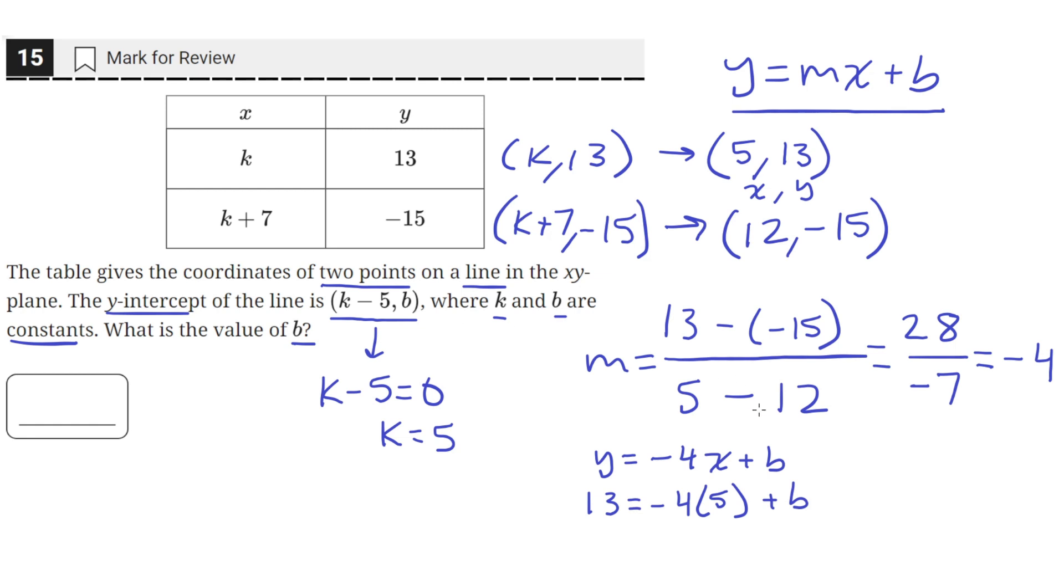So 13 equals negative 4 times 5, which is negative 20 plus b. So that means if we move this negative 20 to the other side, b equals 33.